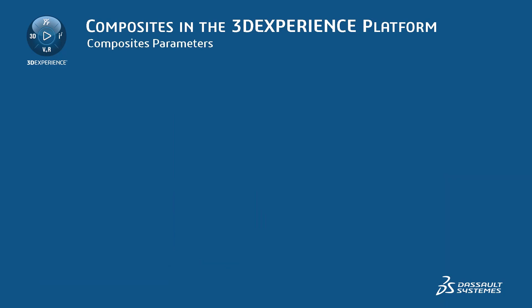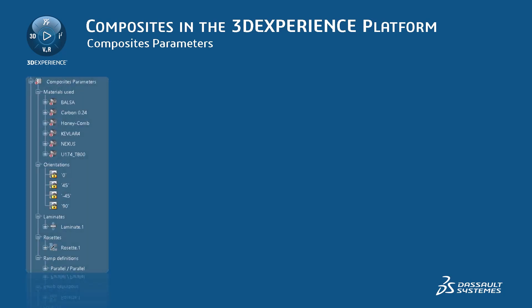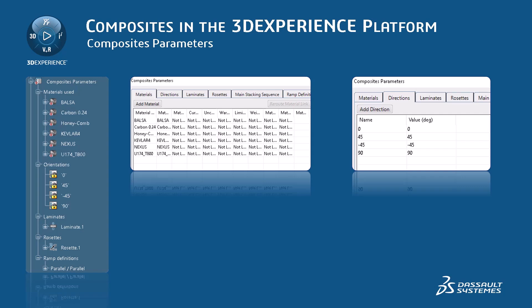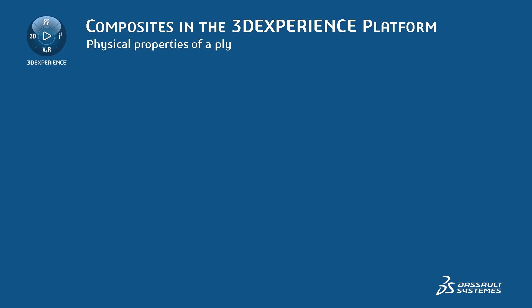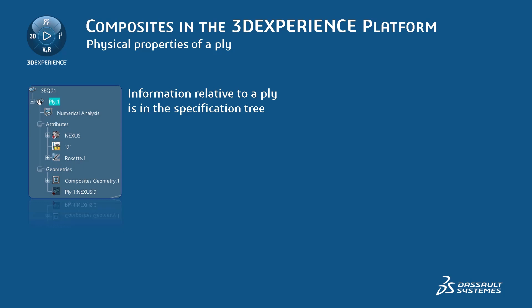Before every design, you will need to define the parameters of the composite using the Composites Design application. First, in materials management, materials may be added or removed. Materials are stored in the part, but you might need to reroute the material in some cases, such as importing a new composite model. Directions can be added and modified as needed; you can even set a color by orientation. You can also add laminate, remove laminate, reorder the stacking sequence, and export or import laminate information in XLS, XLSX, and text format. Finally, you can add a main stacking sequence and a ramp definition. It is important to define the physical properties of a ply, like the geometry with the contours, the attributes with the material, ply direction, and the rosette.